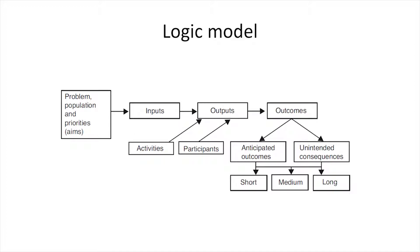The logic model is a useful starting point for understanding and improving processes. A logic model defines what exactly we are trying to improve — our aims or priorities for improvement — describes who we are trying to improve it for, the intended population, and explains why we are trying to improve a particular area of health care, the problem identified as in need of improvement.